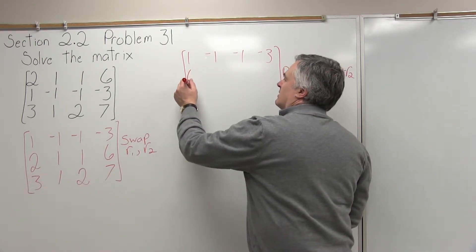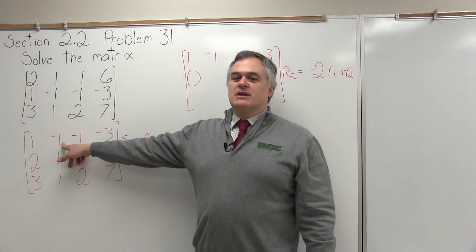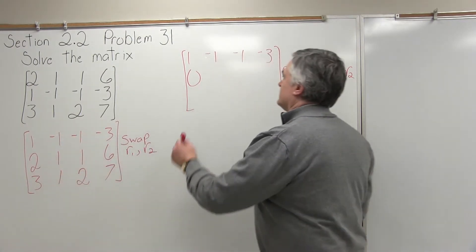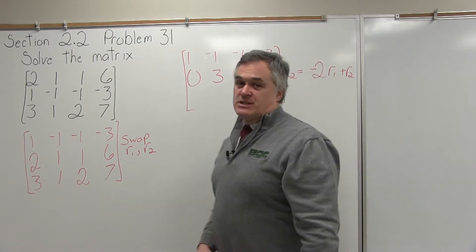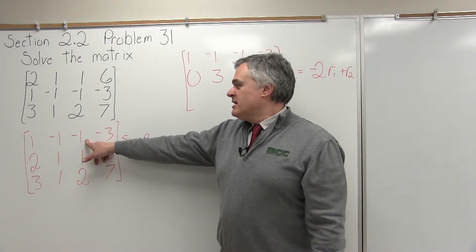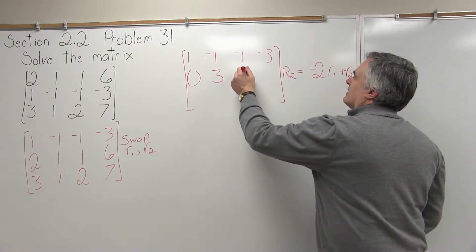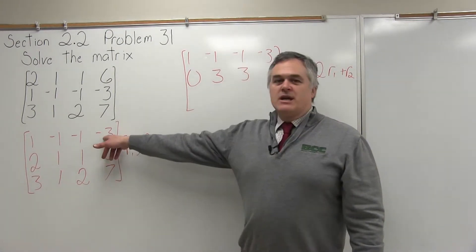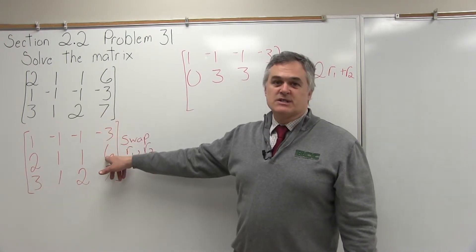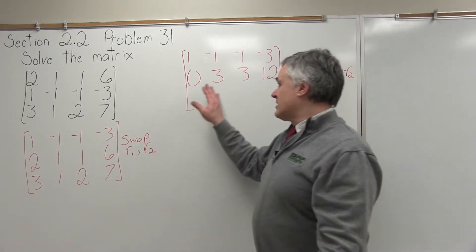So now I apply that equation across row 2. First position: negative 2 times 1 is negative 2, add to row 2's positive 2, gives 0. Next position: negative 2 times negative 1 is positive 2, add positive 1, gives positive 3. Next position: negative 2 times negative 1 again gives positive 2, add positive 1, gives positive 3. Last position: negative 2 times negative 3 is positive 6, add positive 6, gives positive 12. That takes care of my new row 2 — I've got my 0.